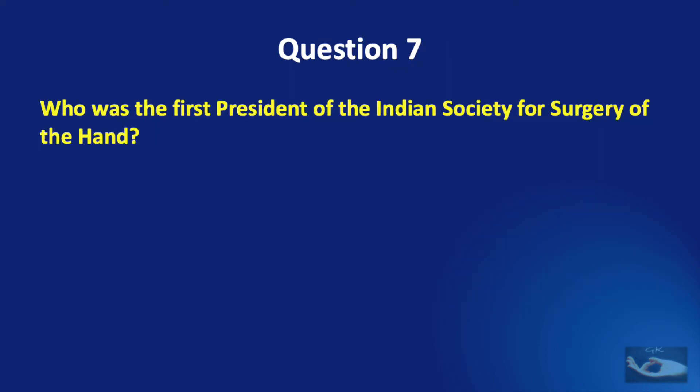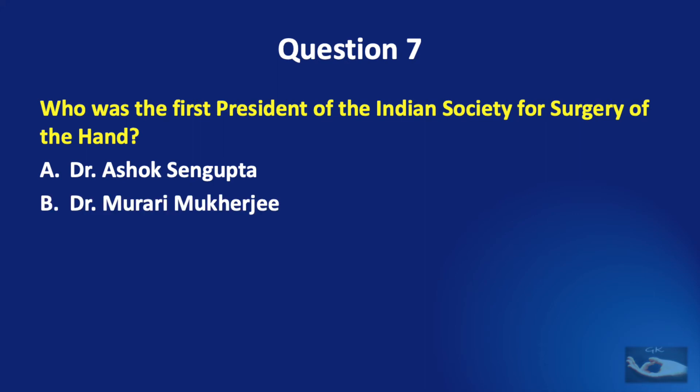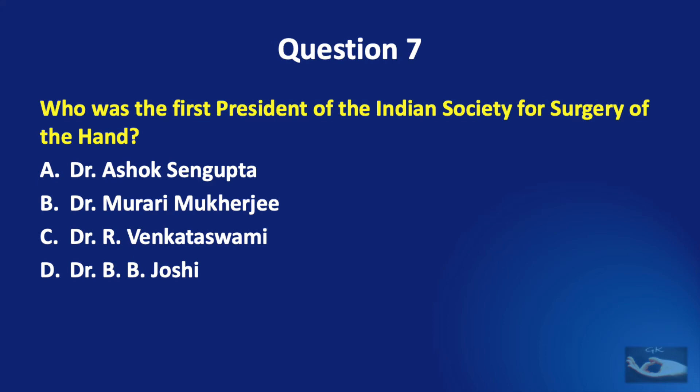Question number seven. Who was the first president of the Indian Society for Surgery of the Hand? Dr. Ashok Sengupta, Dr. Murari Mukherjee, Dr. R. Venkataswamy, or Dr. B.B. Joshi?